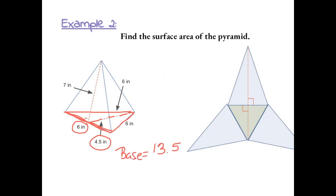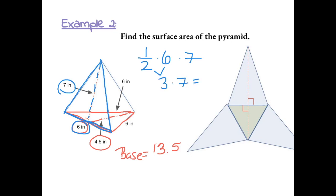Next, we want to find the area of one of the sides of the pyramid. We do one-half times the base, which is six, times the height, which is seven inches. One-half times six gives us three, and three times seven gives us twenty-one for one side of the pyramid. Because there are three sides, we do twenty-one times three, which gives us sixty-three.